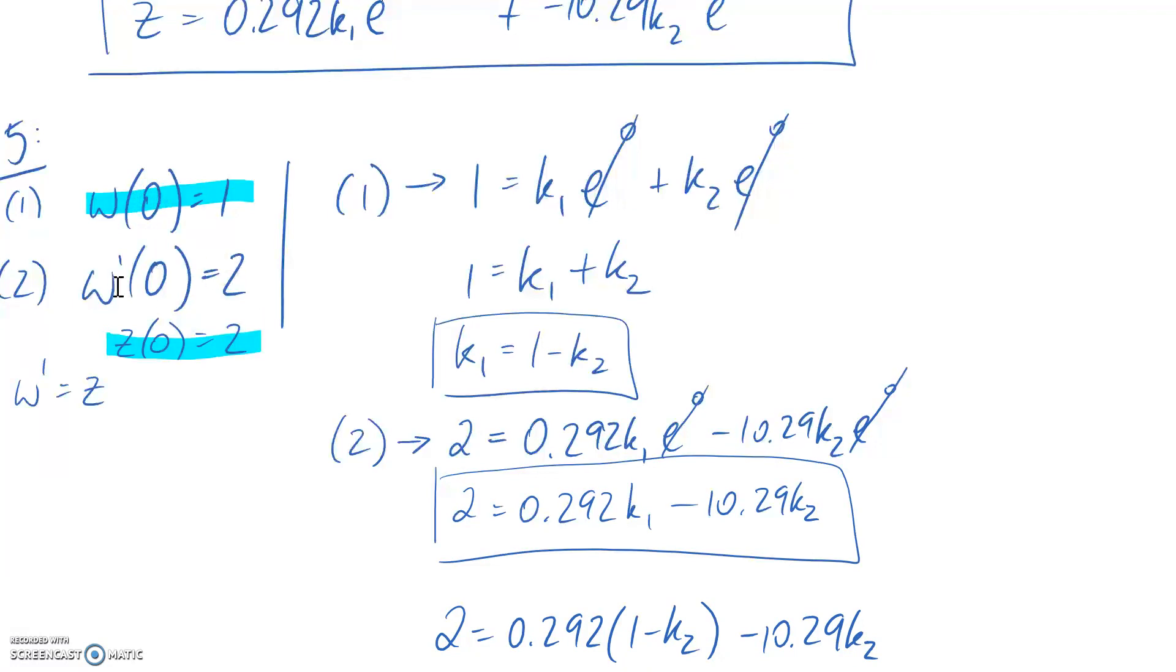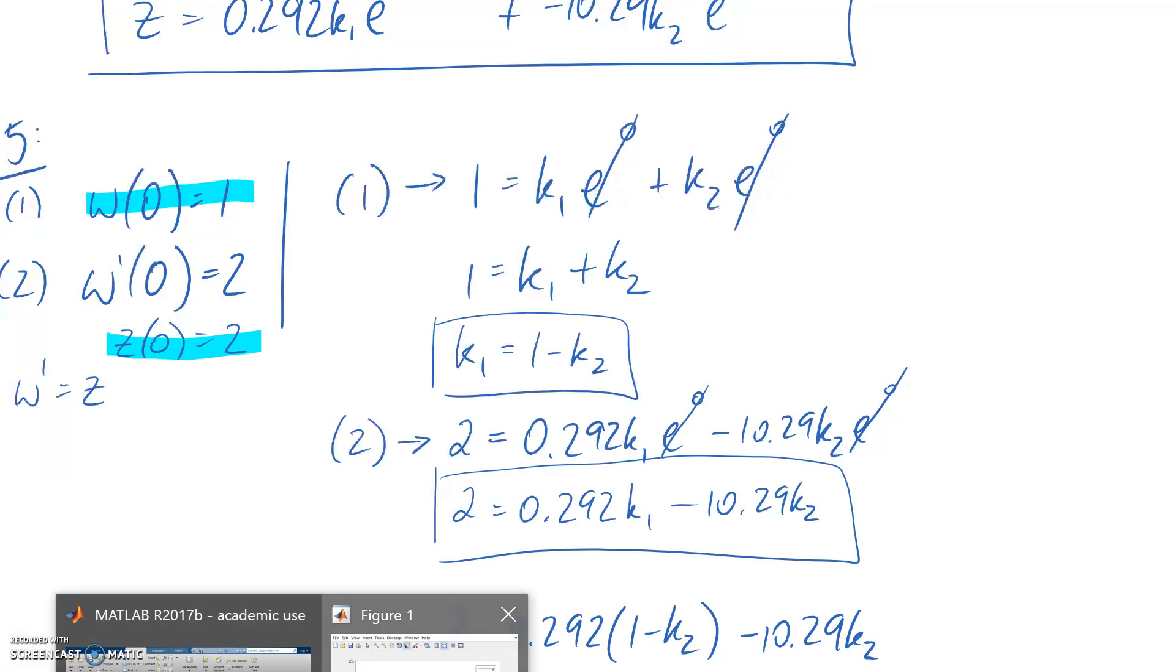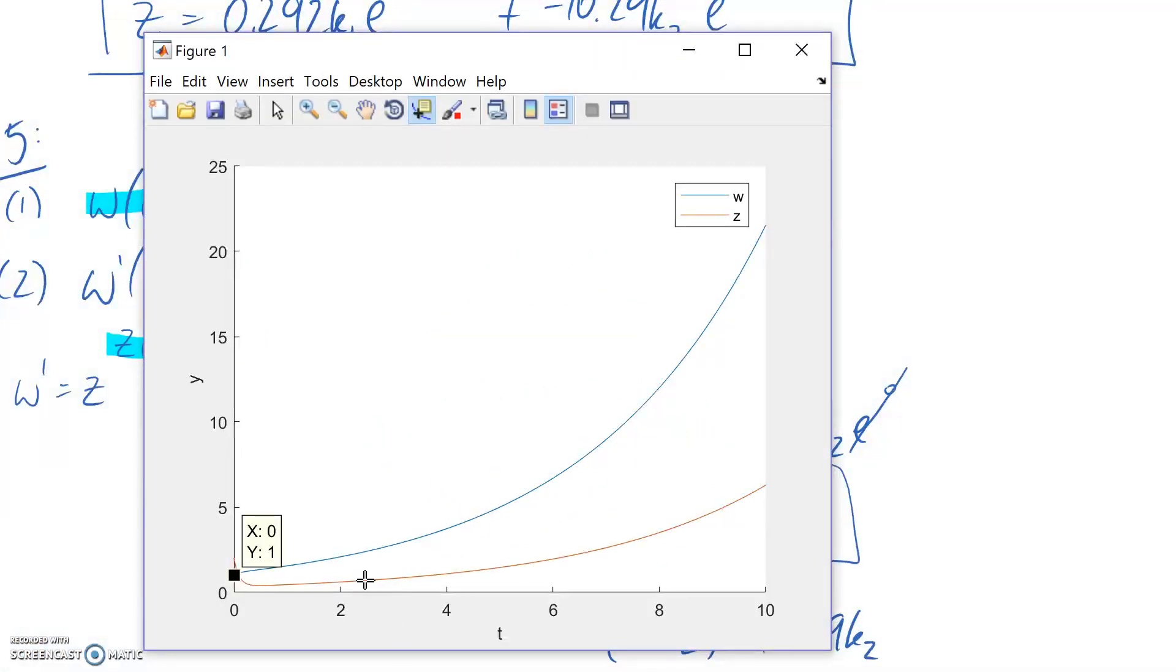So we can verify the second condition. We can write it this way, or we said we could write it in terms of Z. So Z should be equal to 2 when T is equal to 0. And if we go back and have a look at the plot, that should indeed be happening. So Z is this other line, and if we scroll it back, you can see at T equals 0, it's reading off a value of 2. So that's all good.